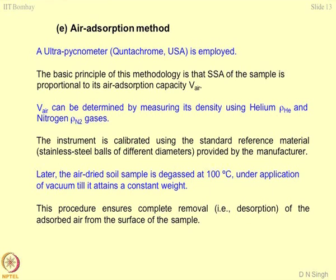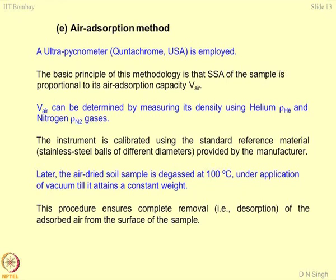This instrument is calibrated using standard reference material — stainless steel balls of different diameters. Steel balls have the smoothest surface, so there should be almost no adsorption of gases on them, making them a reference mark where adsorption is nearly nil. Later, the air-dried sample is degassed at 100 degrees centigrade under vacuum until it attains constant weight. This procedure ensures complete removal — that is, desorption of adsorbed air from the surface of the sample.